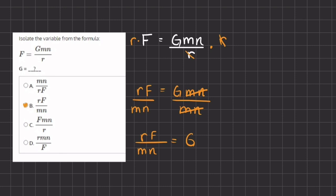Now if you decided to write fr instead of rf, those mean exactly the same thing — rf equals fr. So if you find your answer to be a little bit different, they are actually equivalent because the rules of multiplication allow us to switch between the variables being multiplied. Therefore b is our final answer.